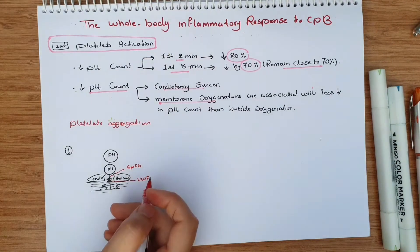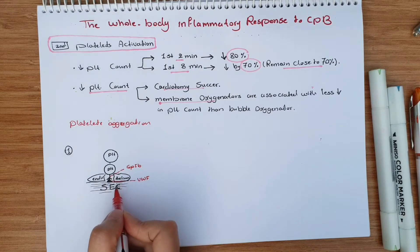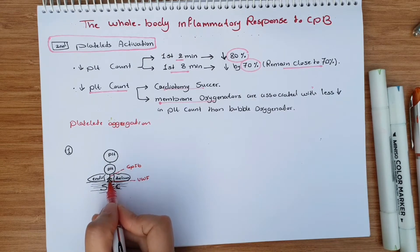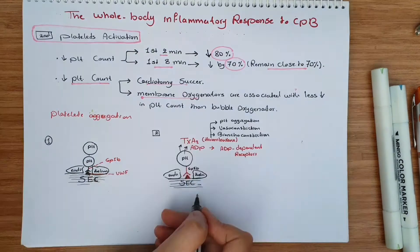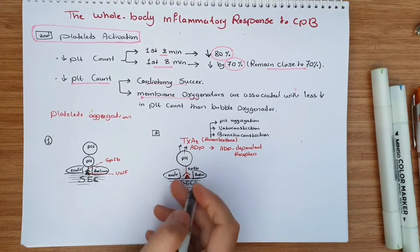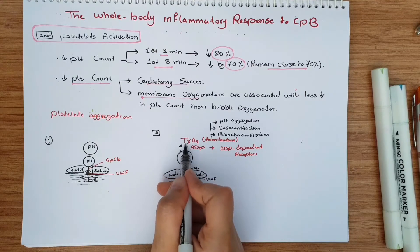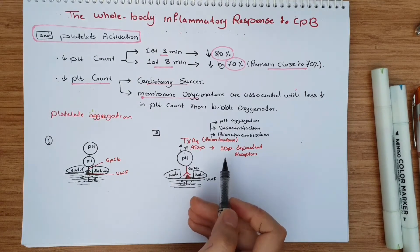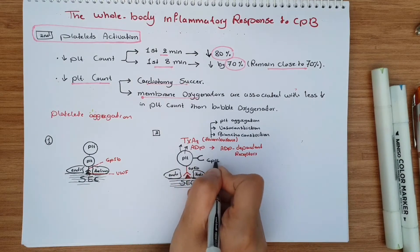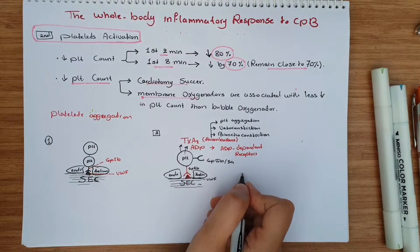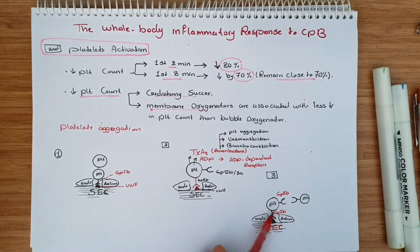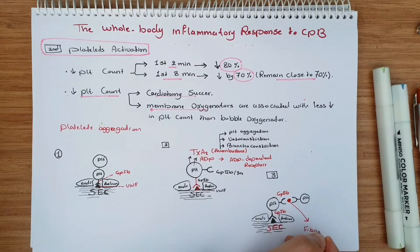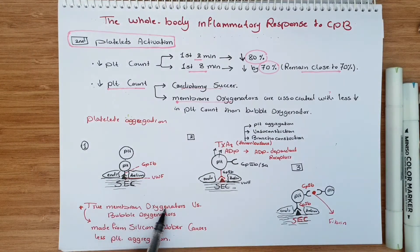When platelets are exposed to subendothelial cells, they bind to von Willebrand factor through glycoprotein 1b, which causes release of granules, thromboxane, and ADP. After the release of these granules, receptors glycoprotein 2b and 3a are present on the platelet surface, causing more platelet aggregation. The coagulation cascade then proceeds and fibrin is formed. During cardiopulmonary bypass, this process is disrupted — those receptors are damaged and there will be no fibrin formation, causing the bleeding associated with this machine. Membrane oxygenators made from silicone cause less damage.